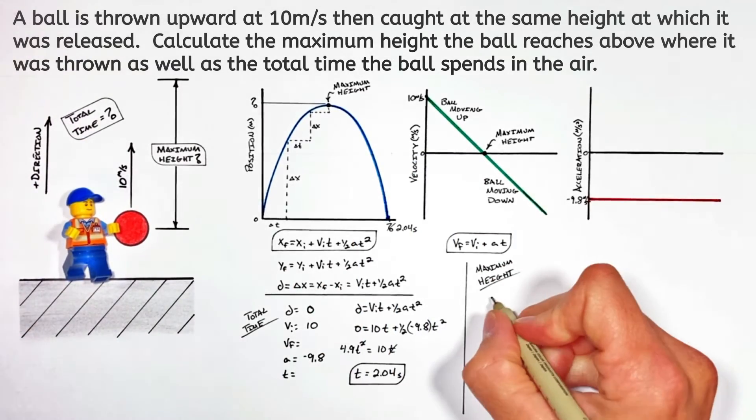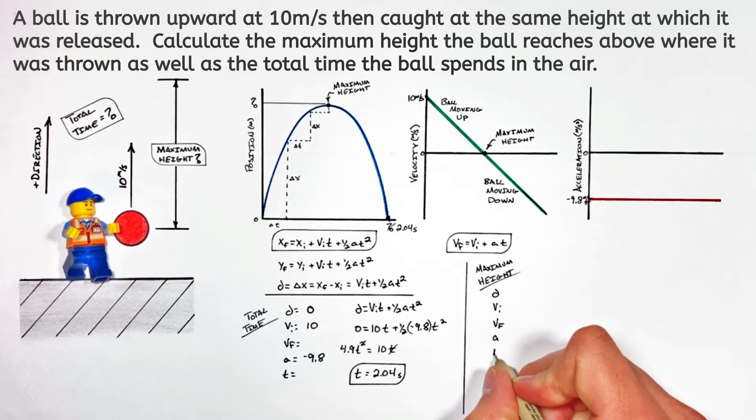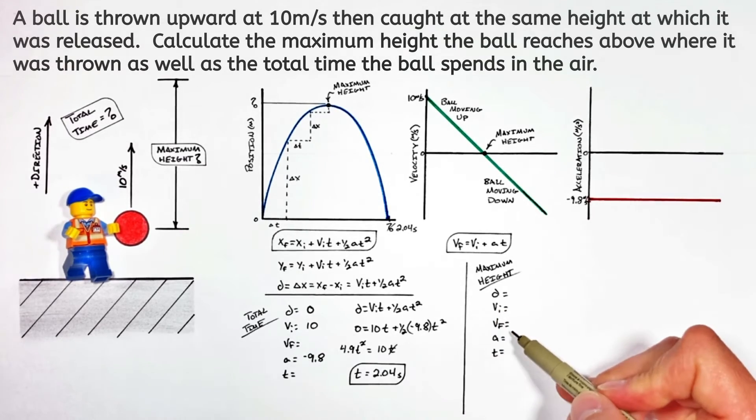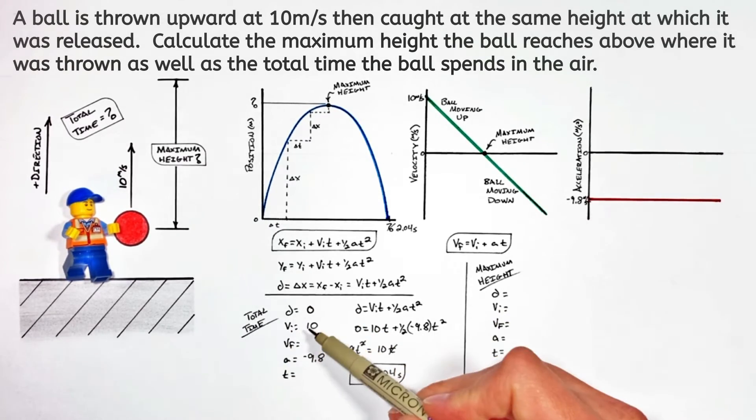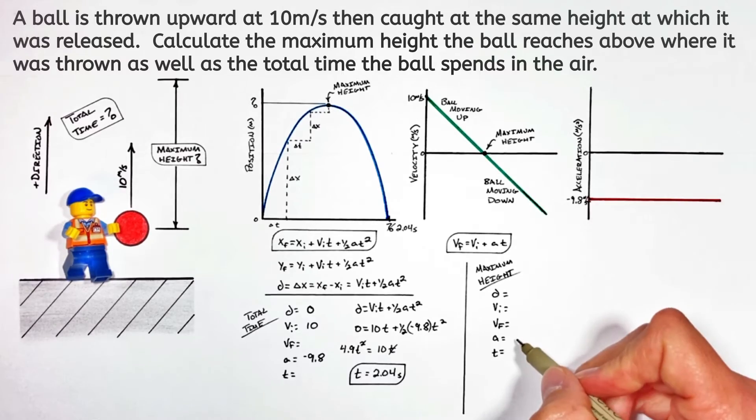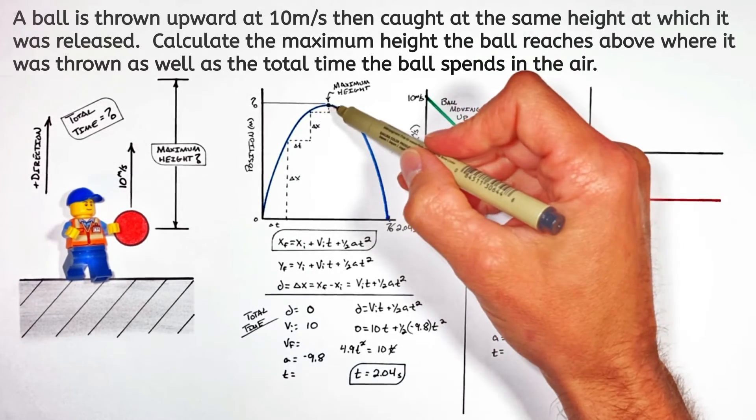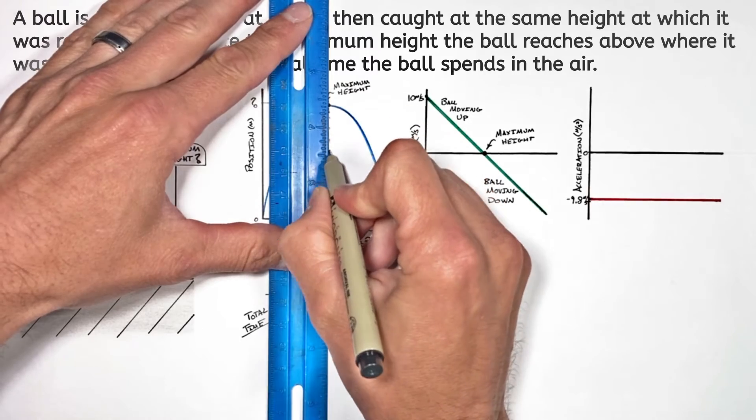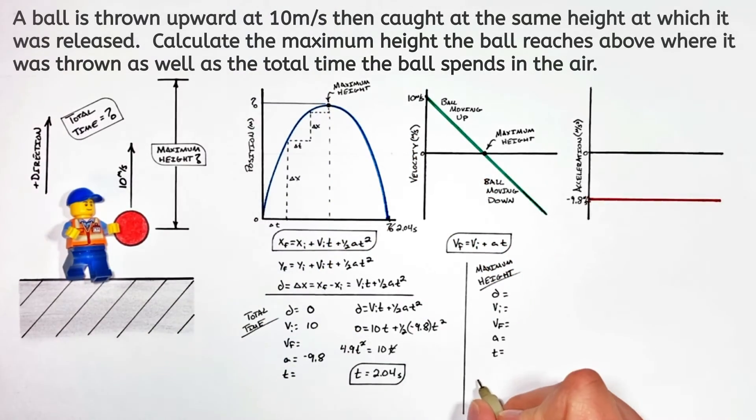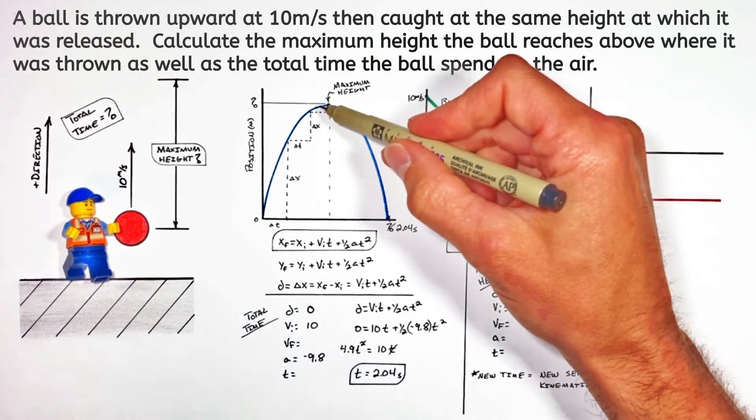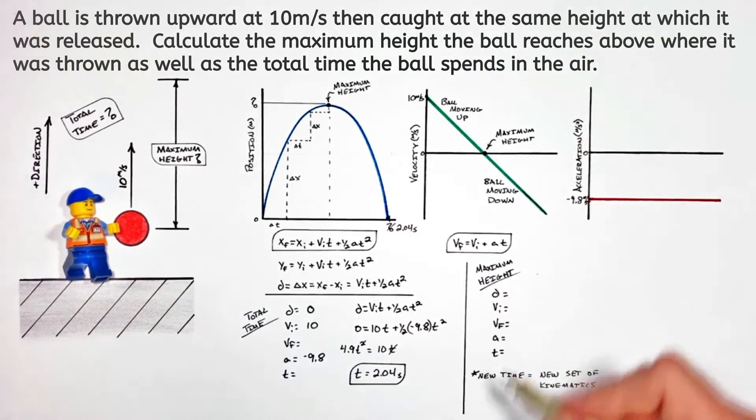Moving on to the maximum height the ball reaches, we're again going to lay out the five kinematic variables. This is really important—I can't stress this enough—because the ball reaches its maximum height at a different point in time than when it lands, we can't use the same five kinematic variables that we did when working out the total time portion of this problem.